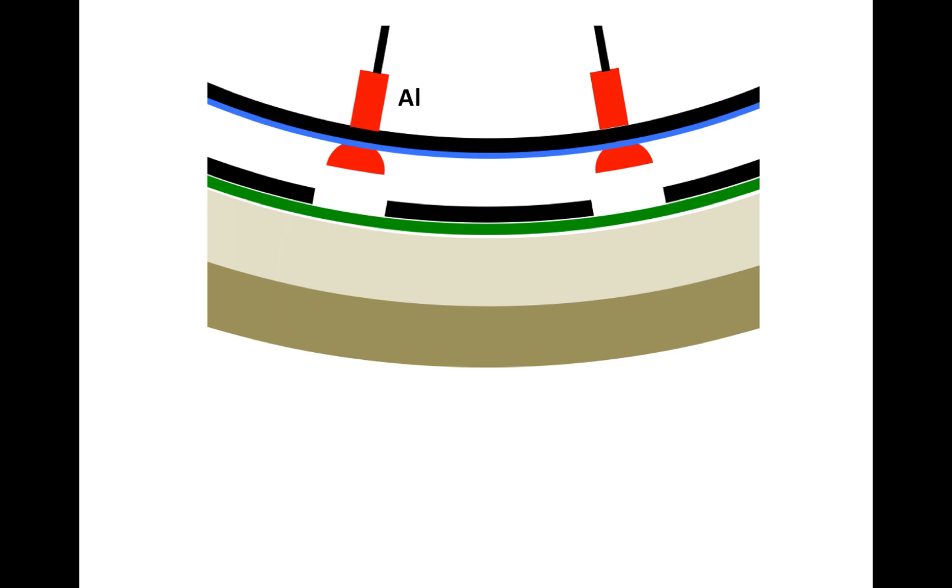Now the corrosion begins here, where the aluminum, the unprotected aluminum metal, which is a pretty reactive metal, starts the reaction by giving up three electrons and becoming the aluminum ion.